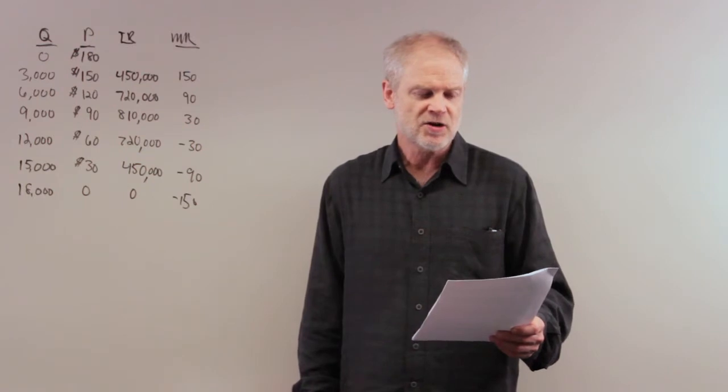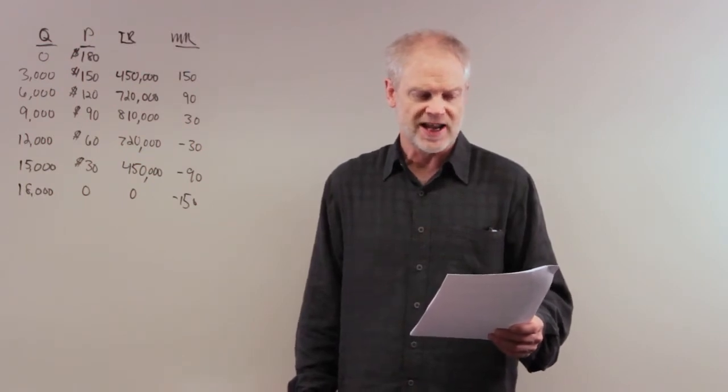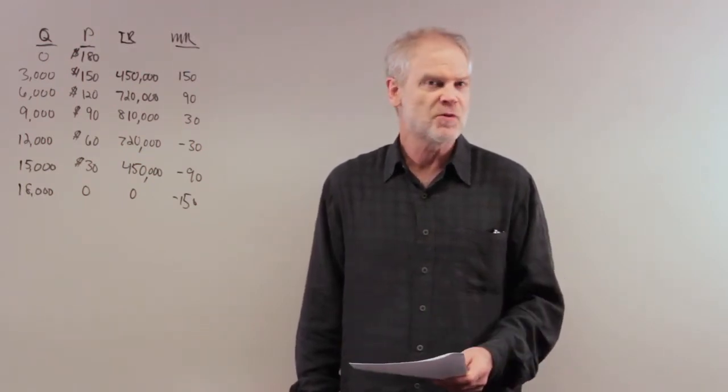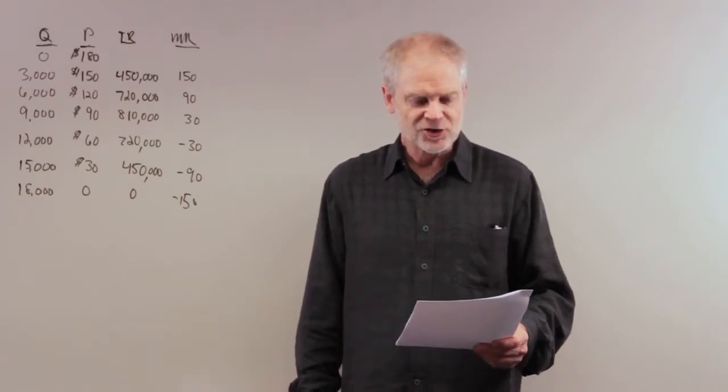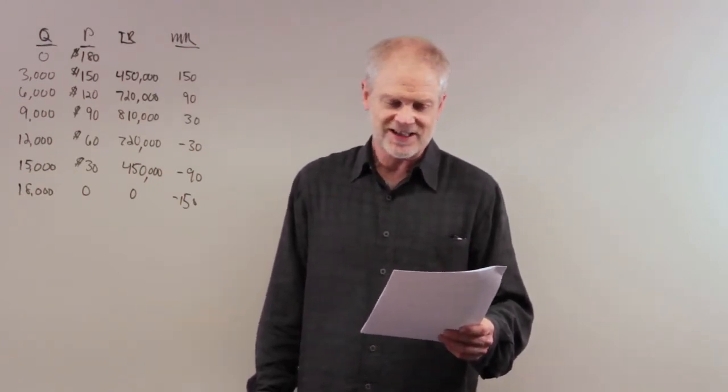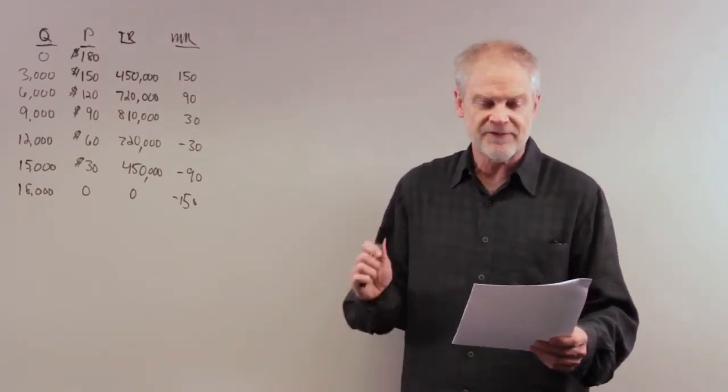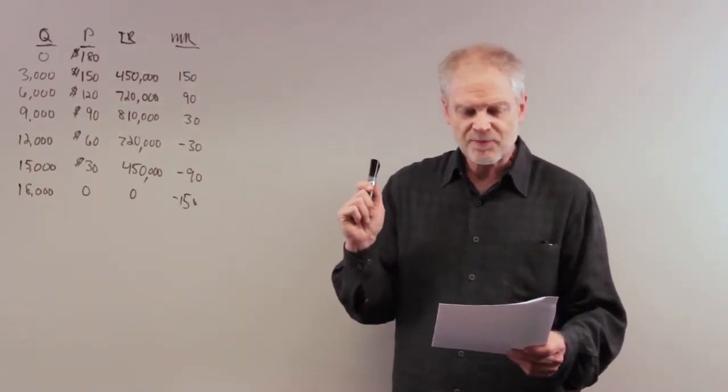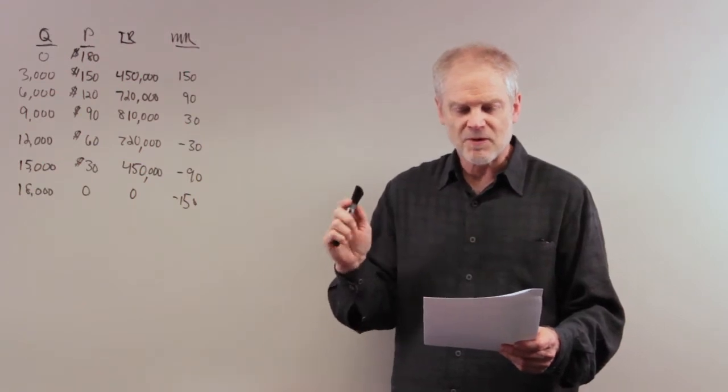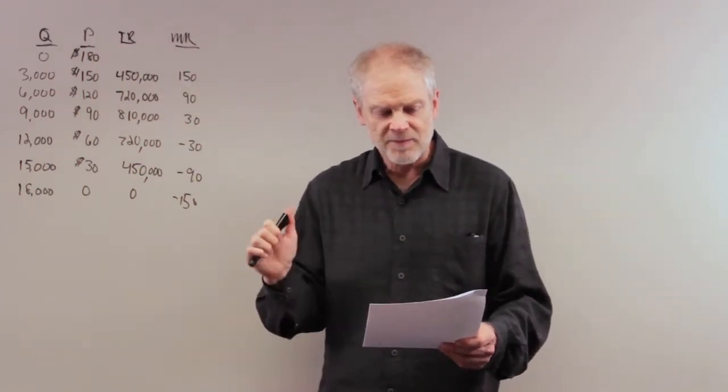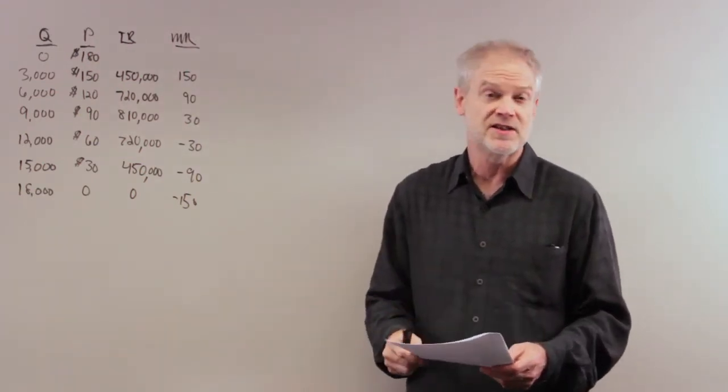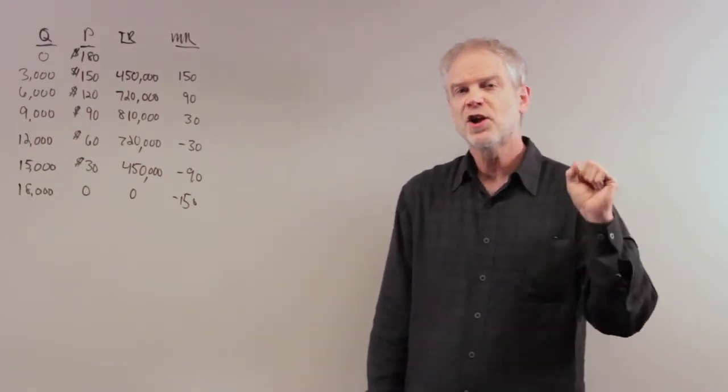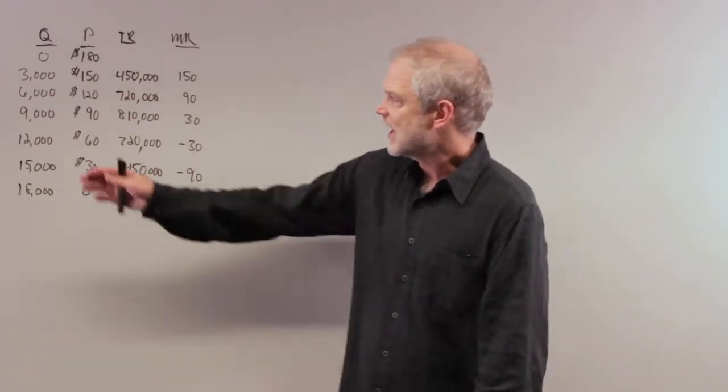The table shows the demand curve for premium digital cable TV subscriptions in a small urban market. Assume each digital cable operator pays a fixed cost of $200,000 a year, and the marginal cost of providing service to a household is zero. So zero marginal cost, $200,000 fixed cost. I have the demand for subscribers here, the price we'll charge, and I've added a few other columns.